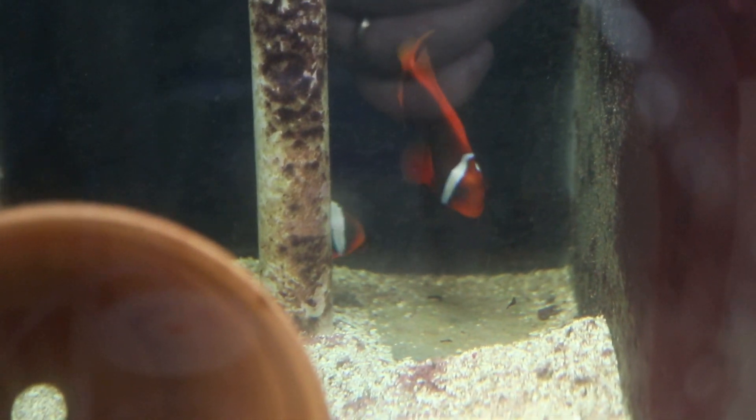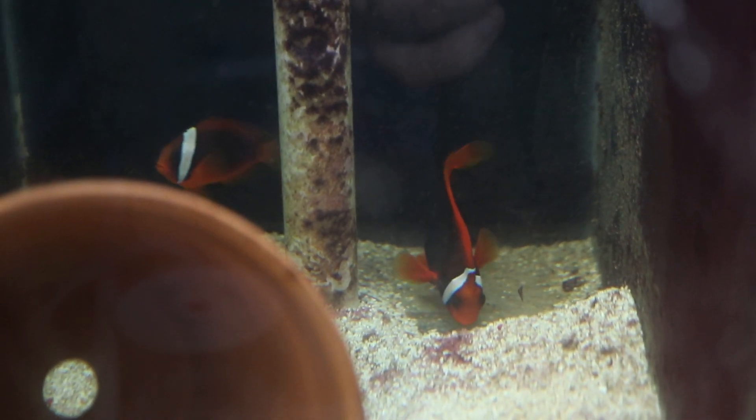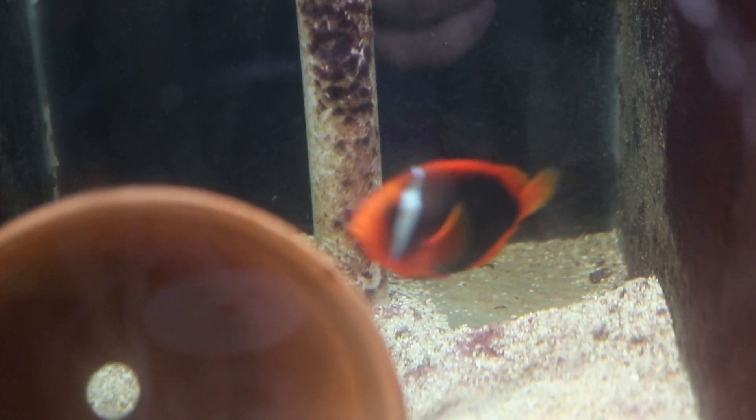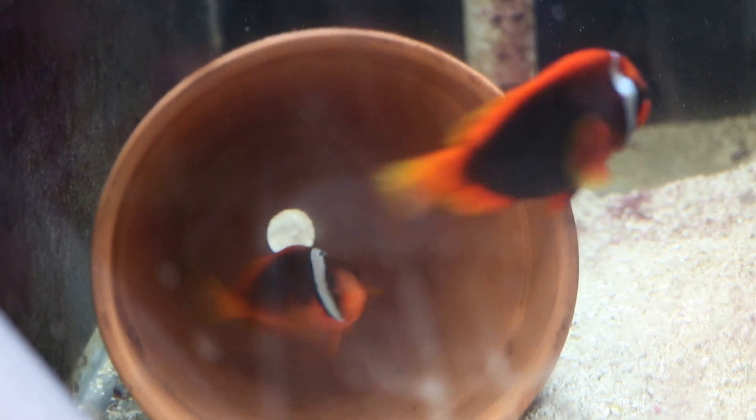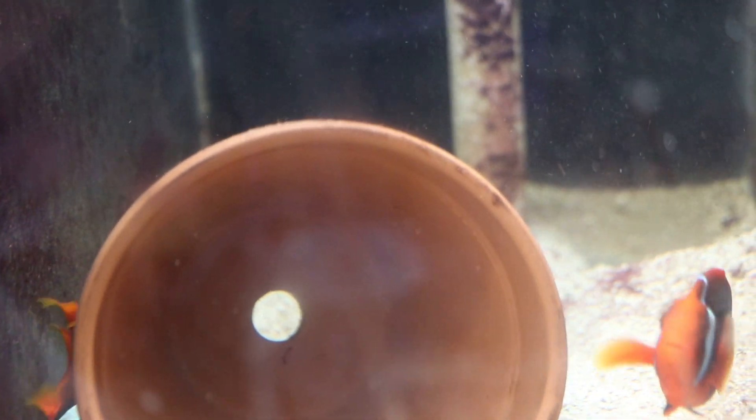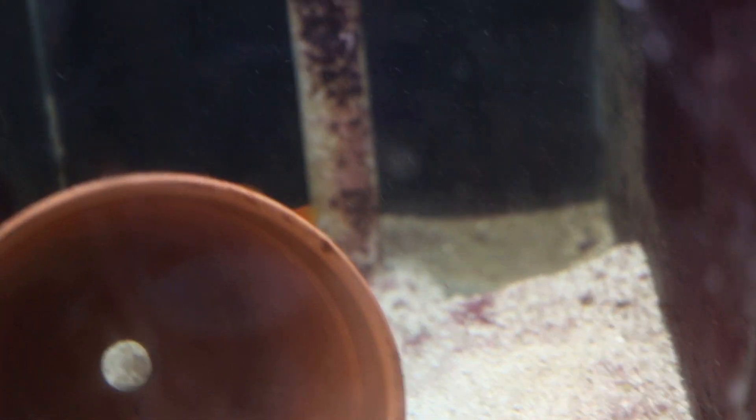This is the tomato clownfish that I've just recently started getting spawns from. I've had these guys for a little over a year. They are doing pretty well, obviously, if they're spawning. So that's the big female. And there's the male. The males and the tomatoes are a little bit bigger. So I'm hoping to see a spawn here in the next few days from these guys as well, and then we can get another batch of tomatoes going as well.